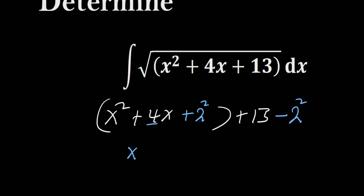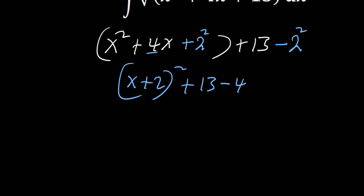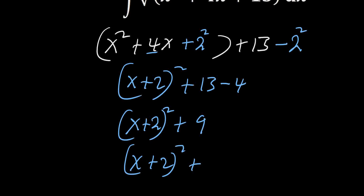Now we can combine x squared and 2 squared to give us (x+2) squared, plus 13 minus 4. Since 2 squared is 4, this becomes (x+2) squared plus 9. We can rewrite 9 as 3 squared.